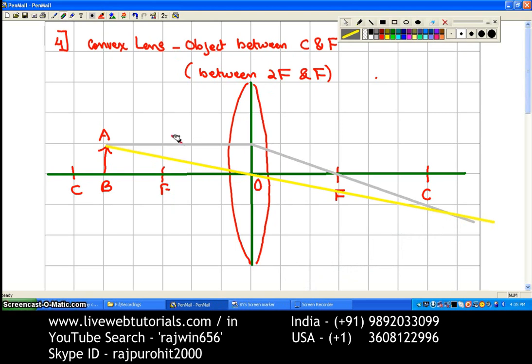The grey colored ray first: this is the ray that is traveling parallel to the principal axis. After refraction or passing through the lens, it is passing through the focus. The second ray, the yellow colored ray, through point A is passing through the optical center, and after refraction it is not going to change its path or it will travel without any deviation. Now you can see this is the point where both of these rays are meeting.